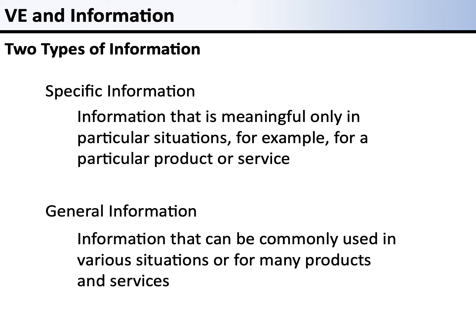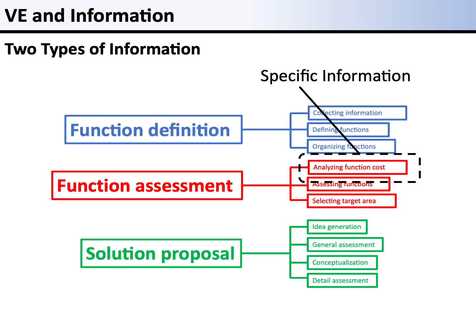Specific information is meaningful only in particular situations — for example, for a particular product or service. General information can be commonly used in various situations or for many products and services. Both specific information and general information include information about technology and cost. When collecting information, we must always be aware of which type of information is needed: specific information or general information.